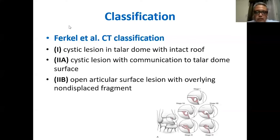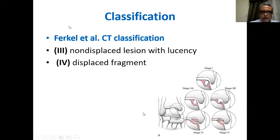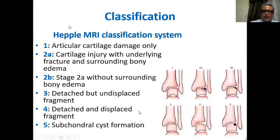The Ferkel classification is based on CT scan: Type 1 is a cystic lesion of the talar dome with an intact roof; Type 2a is a cystic lesion with communication to the talar dome surface; Type 2b is an open articular surface lesion with overlying undisplaced fragment; Type 3 is an undisplaced lesion with lucency; and Type 4 is a displaced osteochondral fragment.